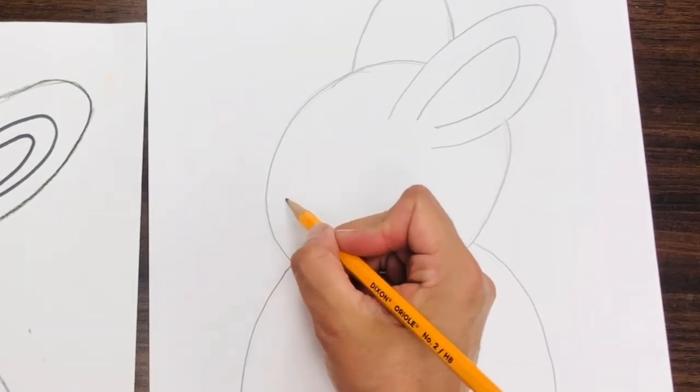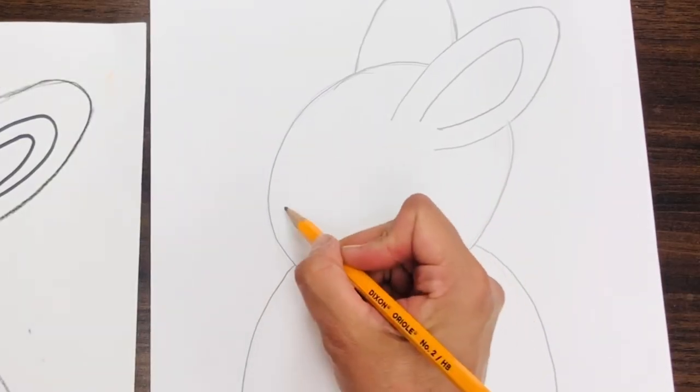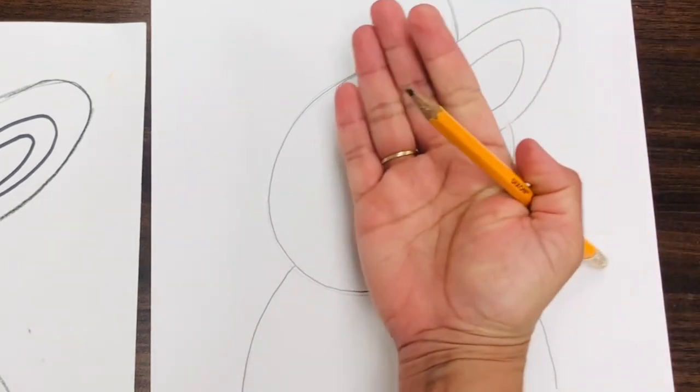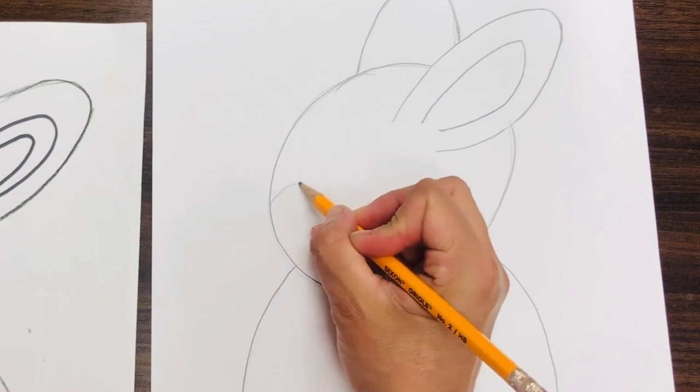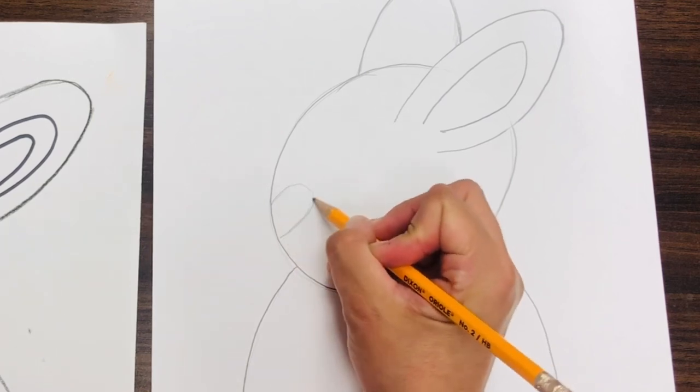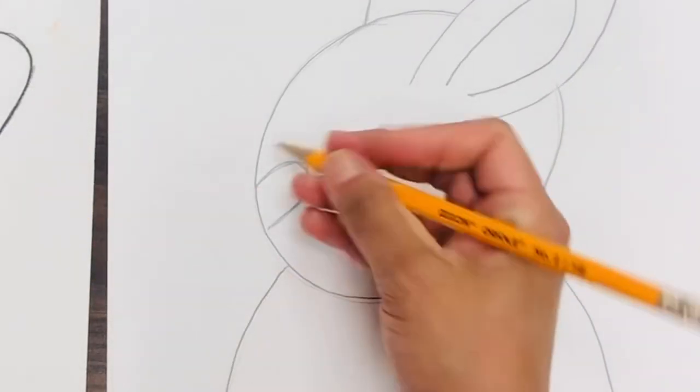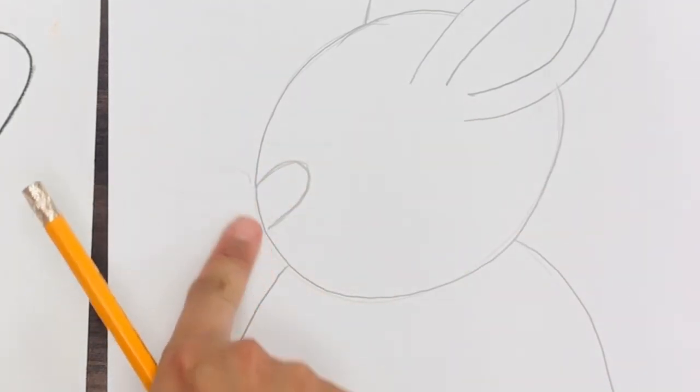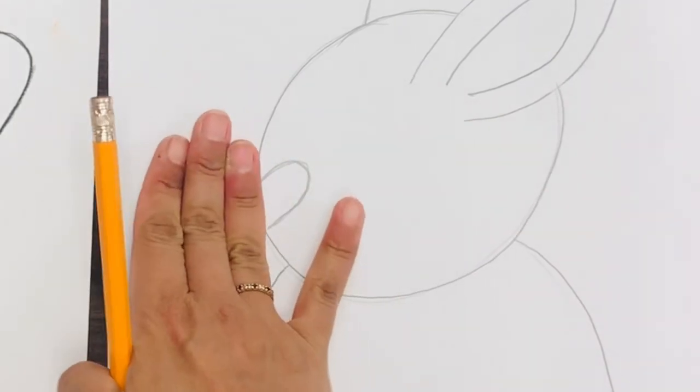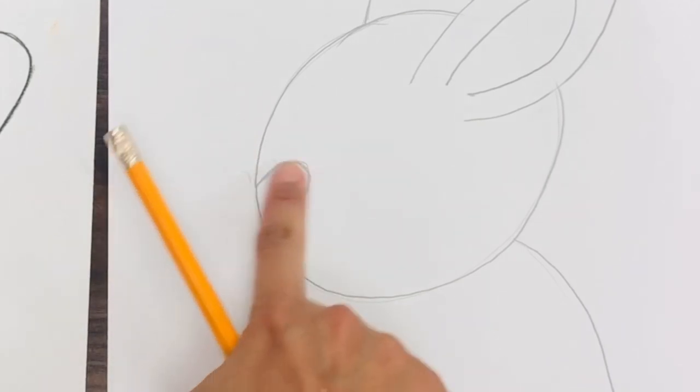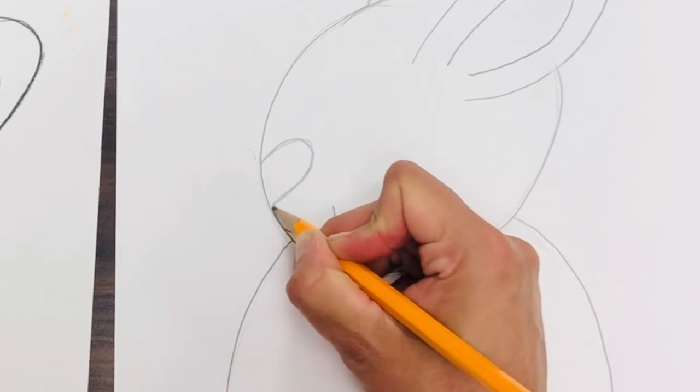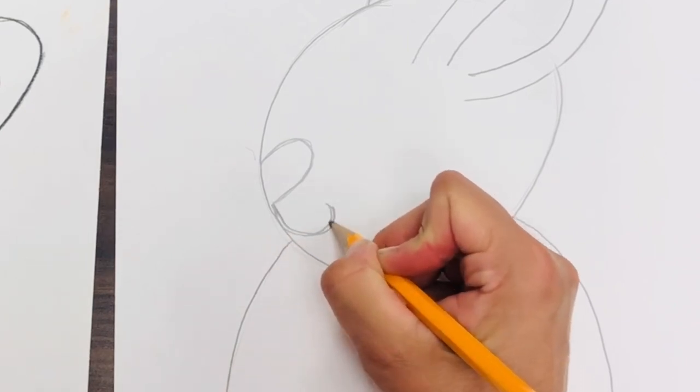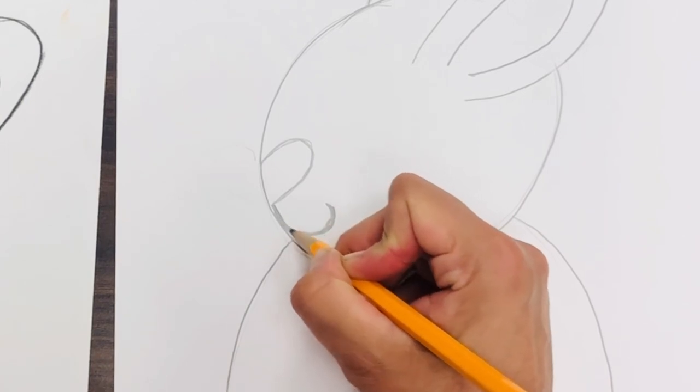For the face, bunnies have noses that kind of look like hearts. And since this is a profile, it's a side view, you only get to see half of the nose. So if this was a full heart, it would kind of be like that, but we only get to see the side view. We are going to make the mouth a curvy line, and you're going to trace that in a little bit as well.